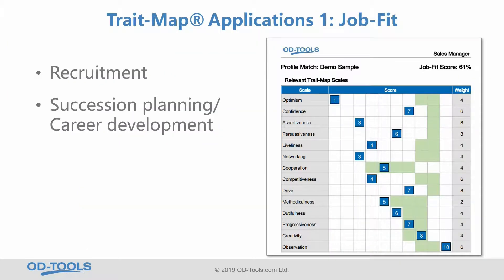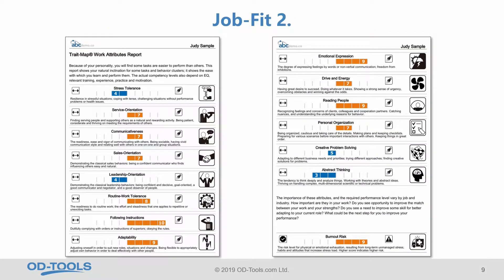TradeMap has the capability to create ideal job profiles and compare each candidate to the ideal profile, showing the degree of match and where the gaps are. The work attribute report makes it easy to compare personality tendencies with competency requirements.